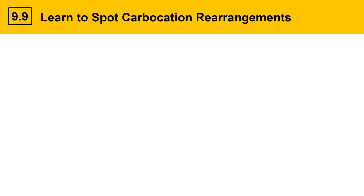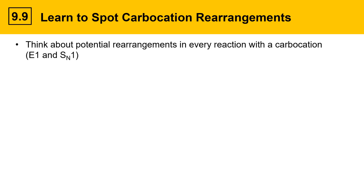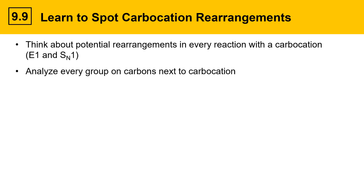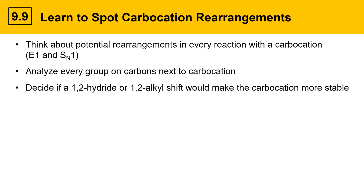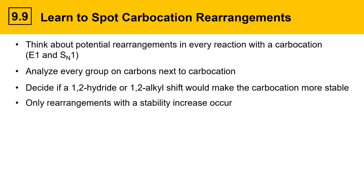You'll need to learn to spot carbocation rearrangements. Think about potential rearrangements in every reaction with a carbocation intermediate — this means E1 and SN1. So every reaction you do from now on, you need to think about the intermediate carbocation and analyze every group on the carbons next to the carbocation, and decide if those groups could move in a 1,2-hydride shift or 1,2-alkyl shift, and whether that would make the carbocation more stable. Only rearrangements with a stability increase will actually occur.